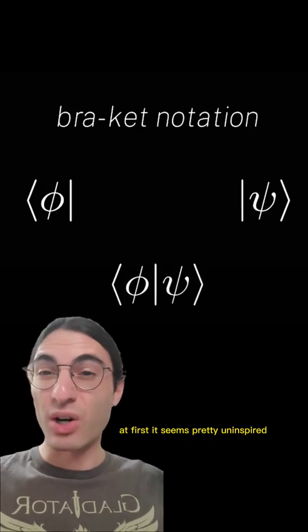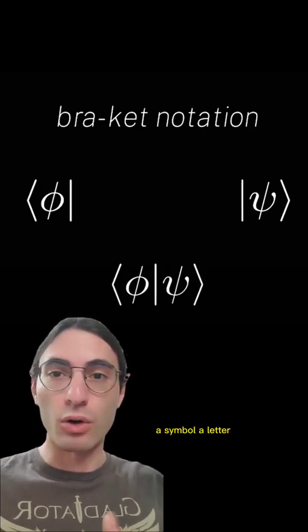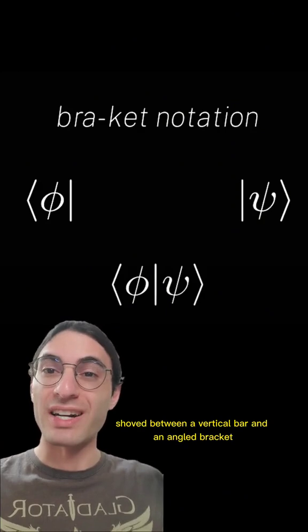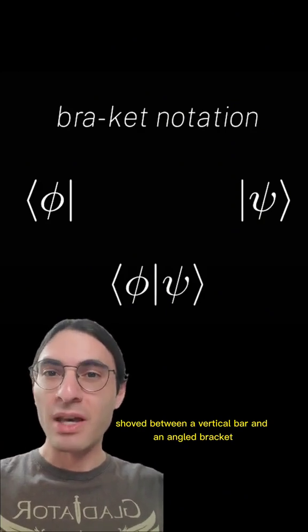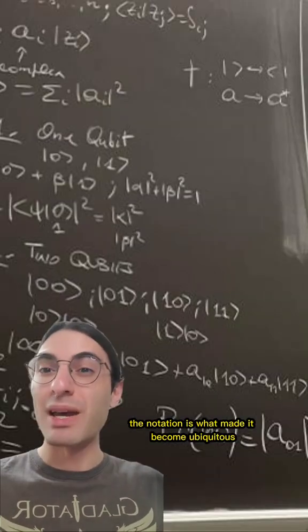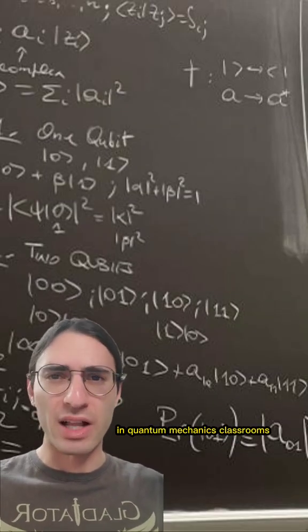At first, it seems pretty uninspired — a symbol, a letter, or a word shoved between a vertical bar and an angled bracket. But the idea underlying the notation is what made it become ubiquitous in quantum mechanics classrooms.